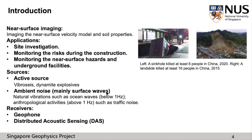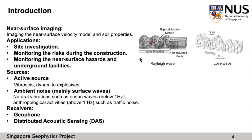Ambient noise mainly contains surface waves. There are mainly two types of surface waves. For a Rayleigh wave, its particle motion is an elliptical retrograde motion. The particle motion of a Love wave forms a horizontal line perpendicular to the direction of propagation. Ambient noise mainly contains natural vibrations and anthropogenic activities. Traffic noise is the main source in urban environments.